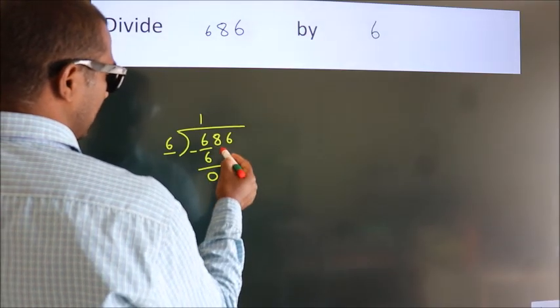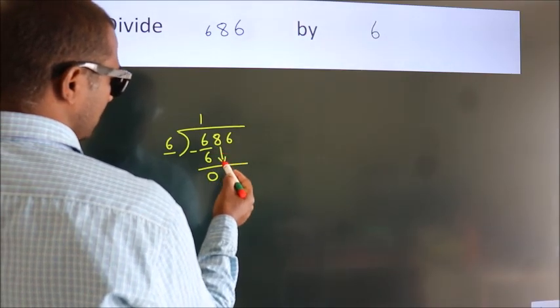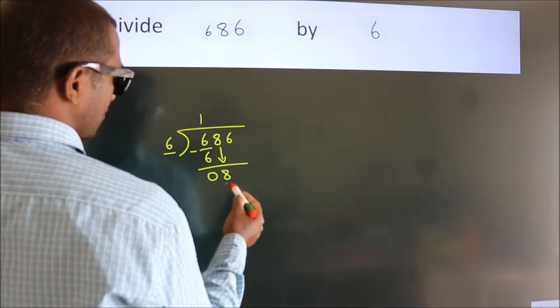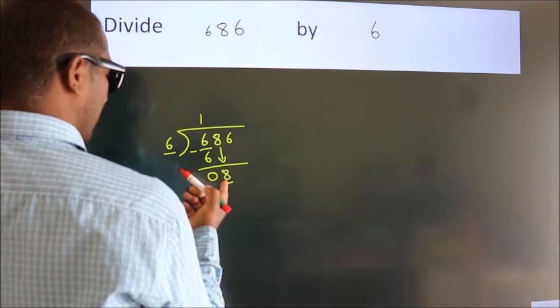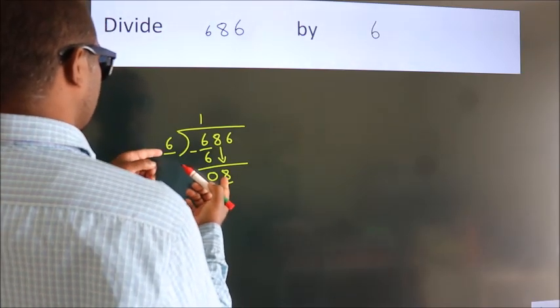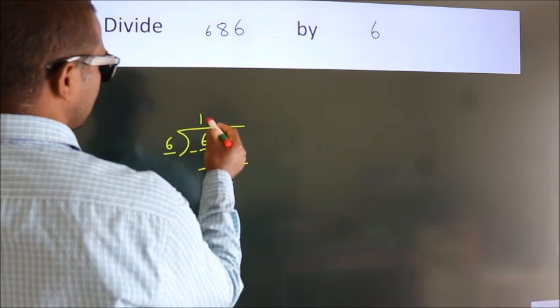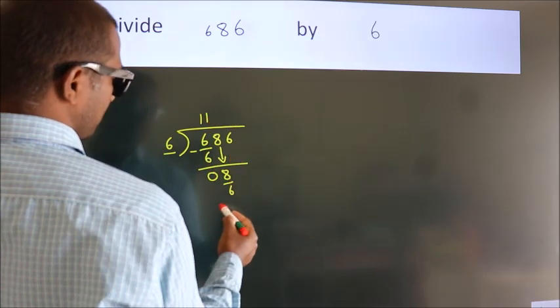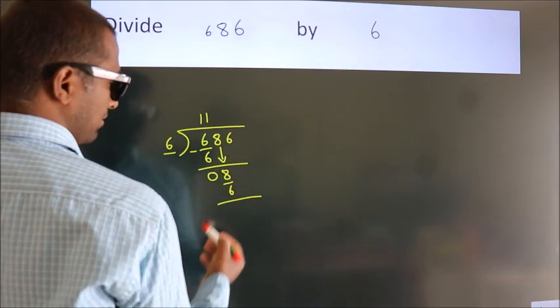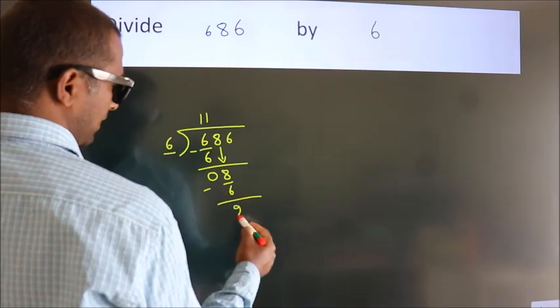After this, bring down the beside number. So 8 down. A number close to 8 in the 6 table is 6 once, 6. Now we subtract. We get 2.